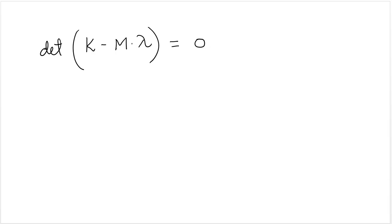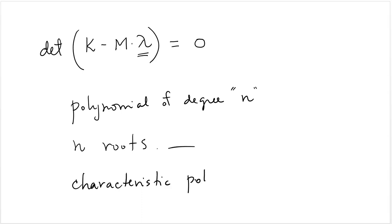When we calculate the determinant of this, we find a polynomial of degree n. Remember, n is the number of degrees of freedom, and we know from a basic theorem of algebra that it will have n roots. And each one of those roots is a solution for lambda. So this polynomial that results from taking the determinant of this matrix is called the characteristic polynomial. And the roots of those polynomials are the lambdas. And so from that, we know that there are n lambdas. So basically, there are n eigenvalues.